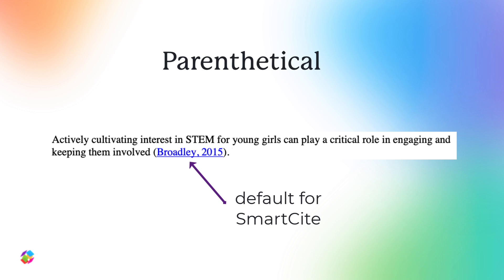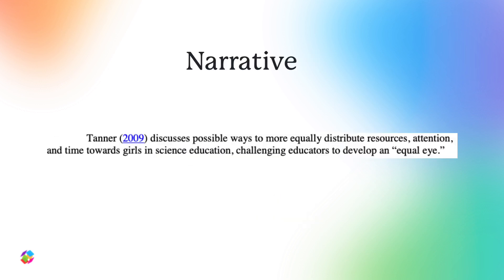This is the default style for SmartCite. Narrative citations are used when the author does want to refer to a specific publication within a sentence, and a typical format is to start off with the author names with the year in parentheses.